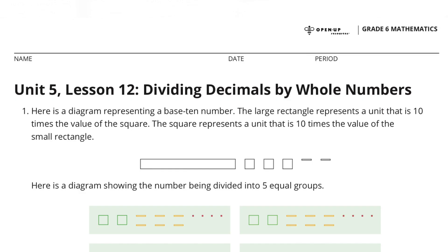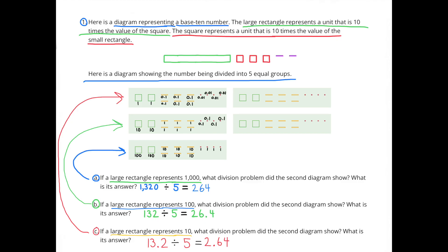Unit 5 Lesson 12, Dividing Decimals by Whole Numbers, Number 1.